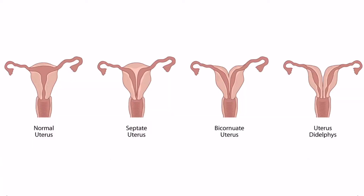This image shows a normal uterus along with three uterine anomalies. Notice that in a septate uterus, the endometrial cavity is indented. However, the top part of the uterus, known as the fundus, is unaffected, so we still see that nice rounding at the top of the uterus.